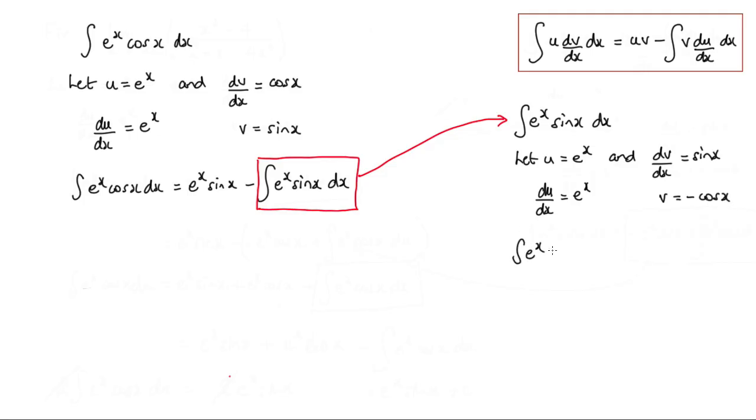So the integral of e to the x sin x dx is equal to u times v. I've got a negative there to consider as well, so it's negative e to the x cos x minus the integral of v. I've got another negative here, so I can make that into a positive. So v times du by dx, which will be e to the x cos x dx.